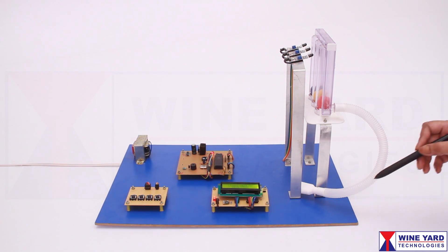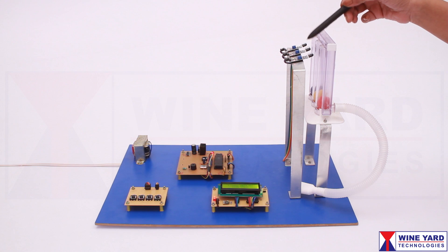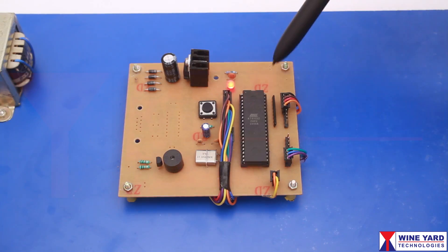This is the inhaling tube and these balls move according to your inhaling capacity. These three IR proximity sensors measure the air capacity of the lungs. These sensors are interfaced to the microcontroller.